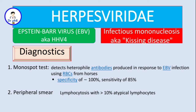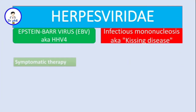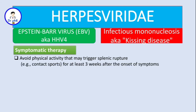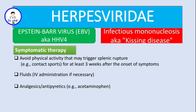Treatment is mainly symptomatic. First, avoid physical activity that may trigger splenic rupture, such as contact sports — this should be avoided for at least three weeks after the onset of symptoms. IV fluids can be given if necessary. Analgesics or antipyretics such as acetaminophen can be given, but aspirin should be avoided because in EBV infection and other viral infections like influenza, aspirin can cause Reye's syndrome.